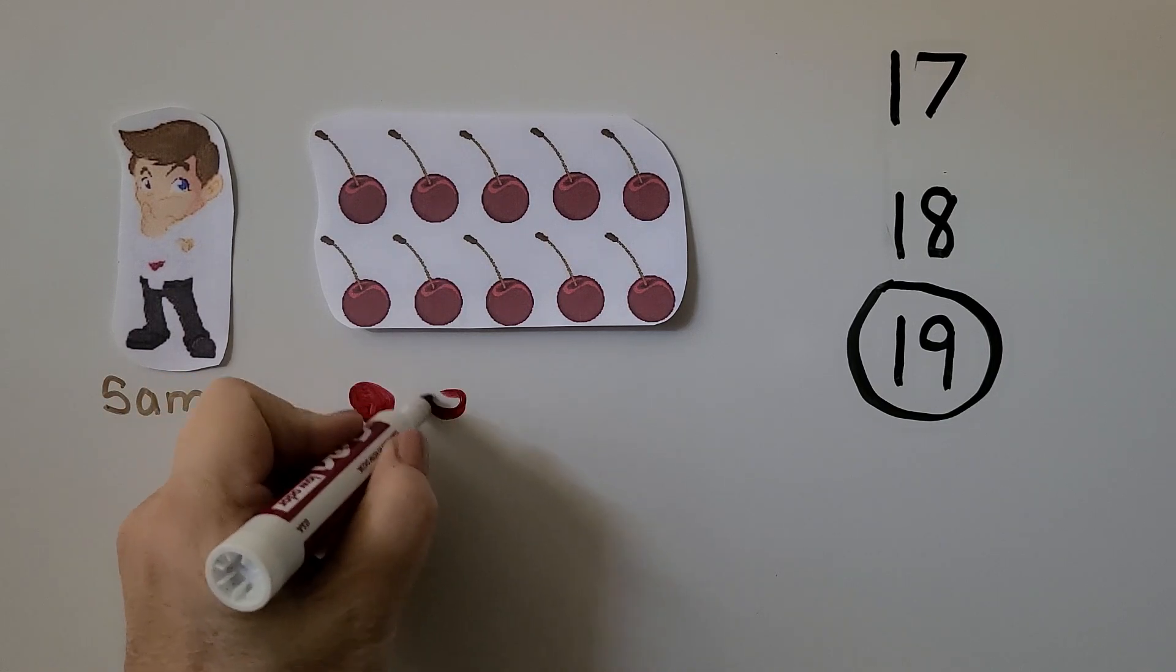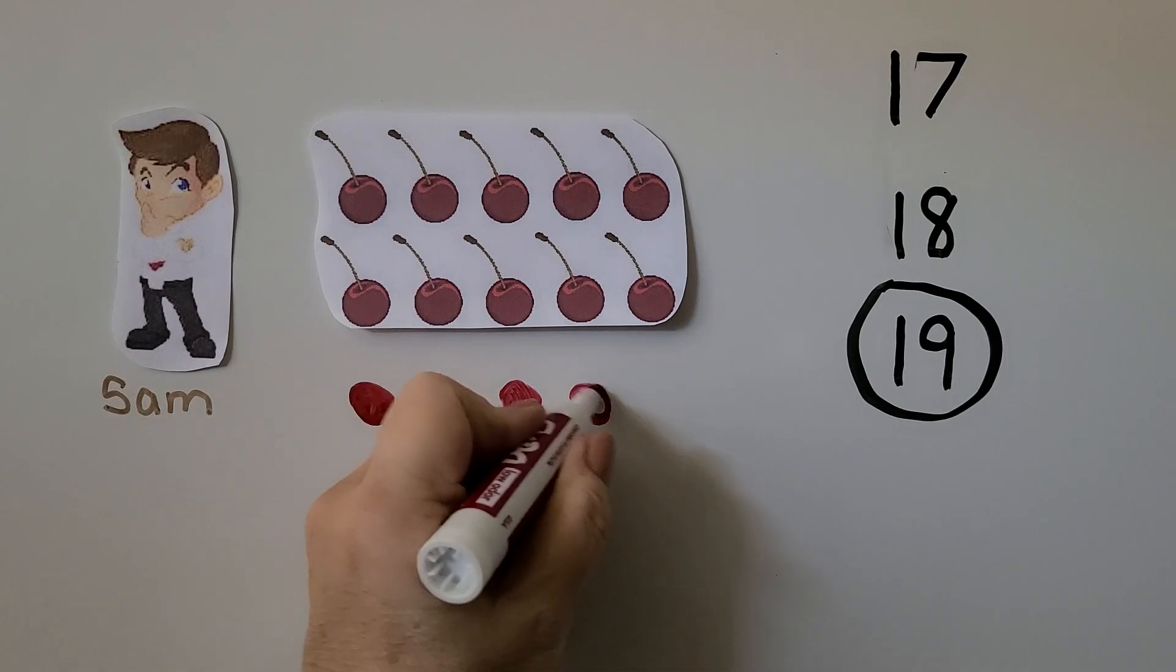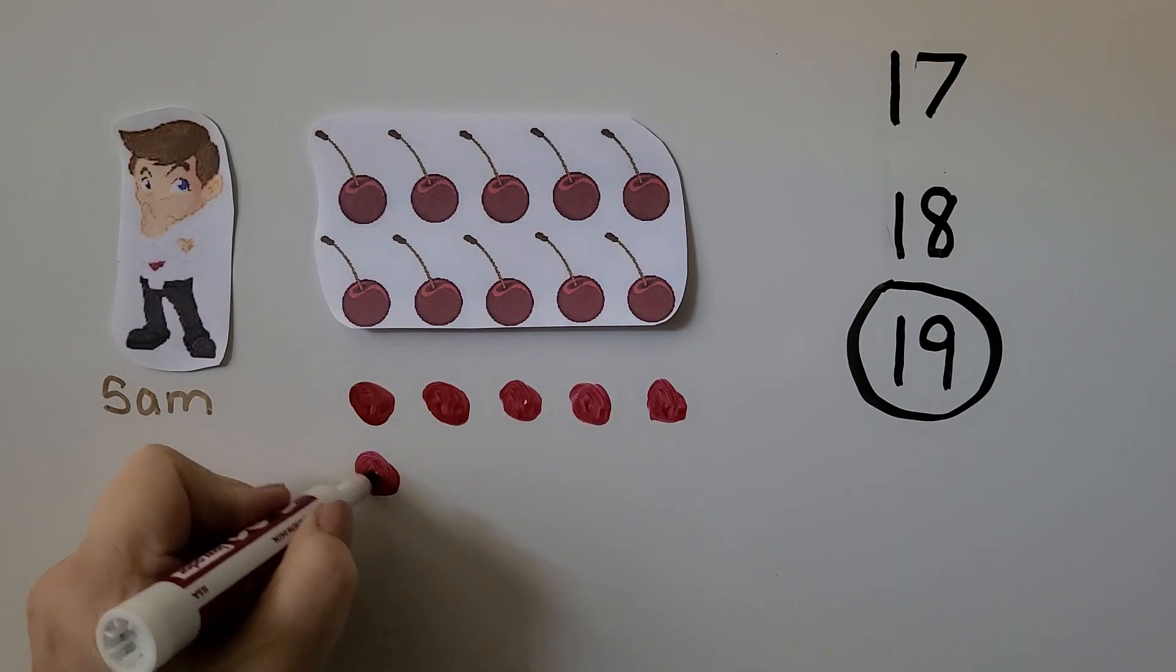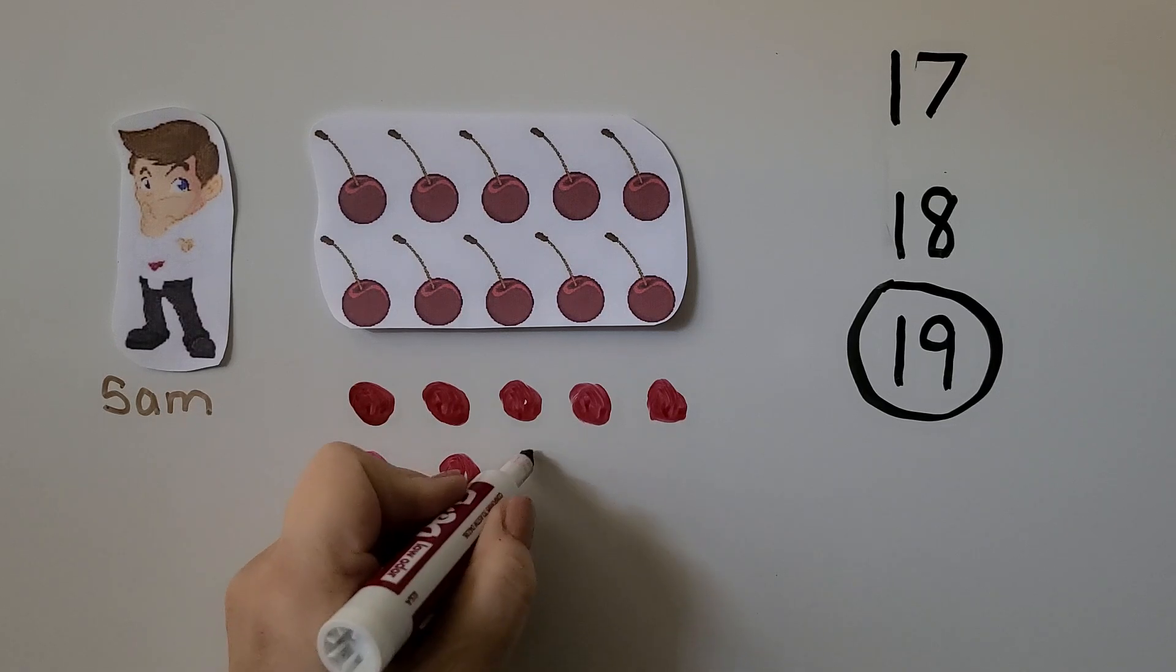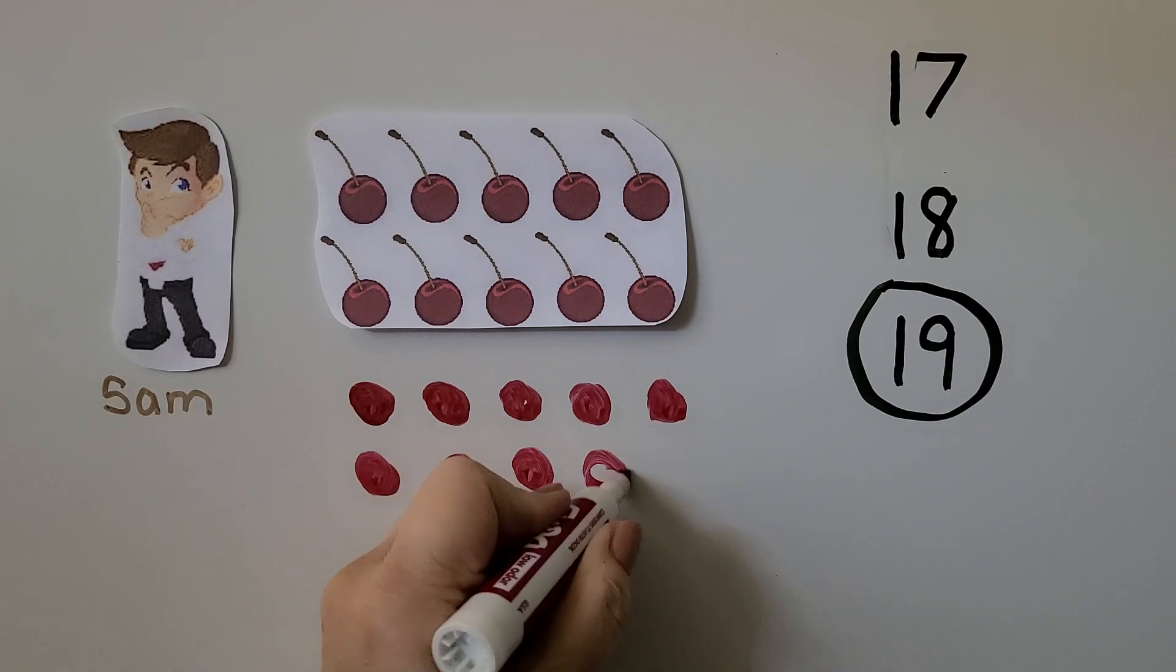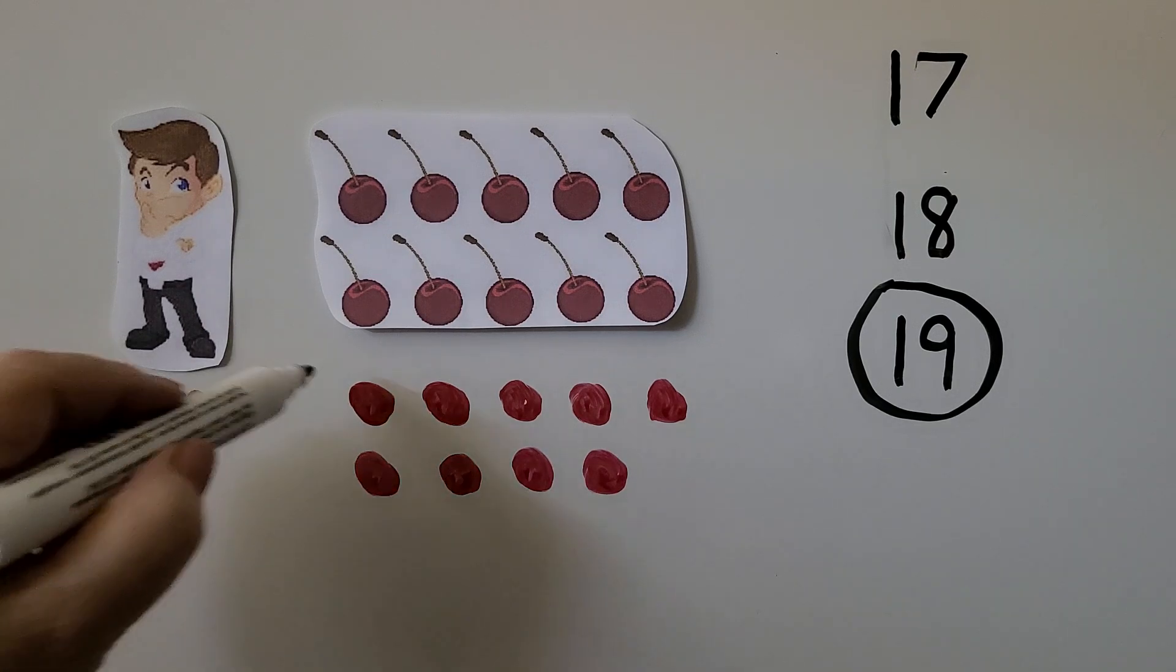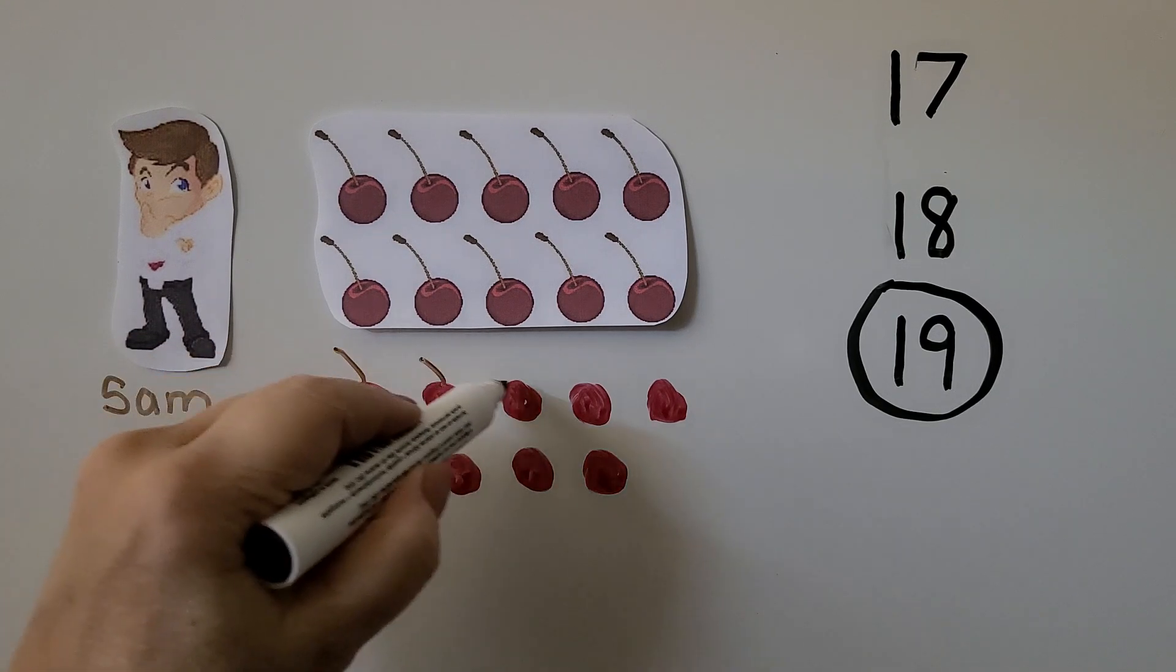1, 2, 3, 4, 5, 6, 7, 8, 9. We can draw stems on them too, couldn't we, to make them look like the other ones? Make them look like cherries?